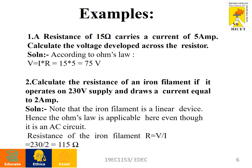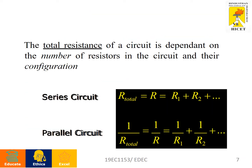Second problem: calculate the resistance of an iron filament if it operates on a 230-volt supply and draws a current of 2 amperes. Note that the iron filament is a linear device, so Ohm's Law is applicable even in an AC circuit. According to Ohm's Law, R = V / I. Substituting V = 230 volts and I = 2 amps gives R = 115 ohms.